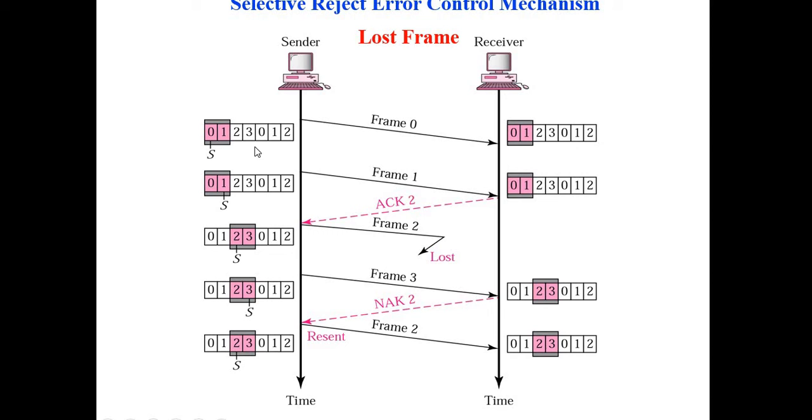So Selective Reject ARQ is, instead of having one window, one element in the window in the receiver's site, we have more than one element. So here, the frame size should be equal to 2 power m minus 1. So if it is greater than 2 power m minus 1, the data is anonymously accepted in the receiver's site, which is not required.